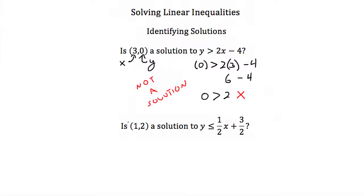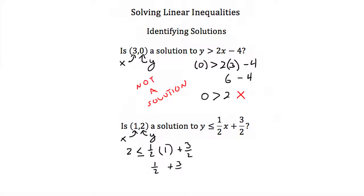Let's try our next example. Here we have: is (1, 2) a solution to y is less than or equal to ½x plus 3/2? To figure out if this is a solution, we plug in 1 for x and 2 for y. We get 2 needs to be less than or equal to ½ times 1, which is just ½, plus 3/2, which equals 4/2, or just 2. So we have 2 needs to be less than or equal to 2, which it is — 2 is equal to 2, and that satisfies our inequality. So (1, 2) is a solution.